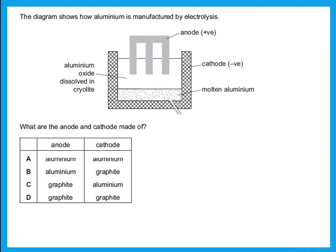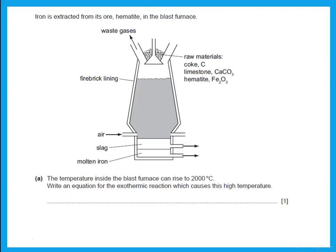The diagram shows how aluminium is manufactured by electrolysis. What are the anode and cathode made of? Remember that in electrolysis of aluminium, both the anode and cathode are made of graphite.